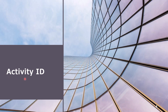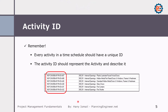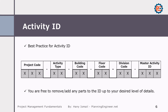Let's start with the activity ID. The activity ID is a numbering system and every activity should have one. There is a best practice for structuring it — you can have it as a random number, which is not good, or you can have it organized. My recommended way includes sections for: project code, then activity type, then building code, then floor code, then division code, then the master activity ID.